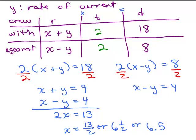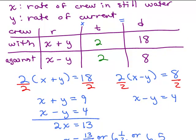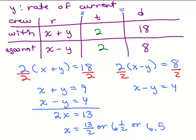Basically, X stood for the rate of the crew team in still water. Remember, that's what X stood for. So they're saying the rate of the crew is really 6 and a half miles per hour.